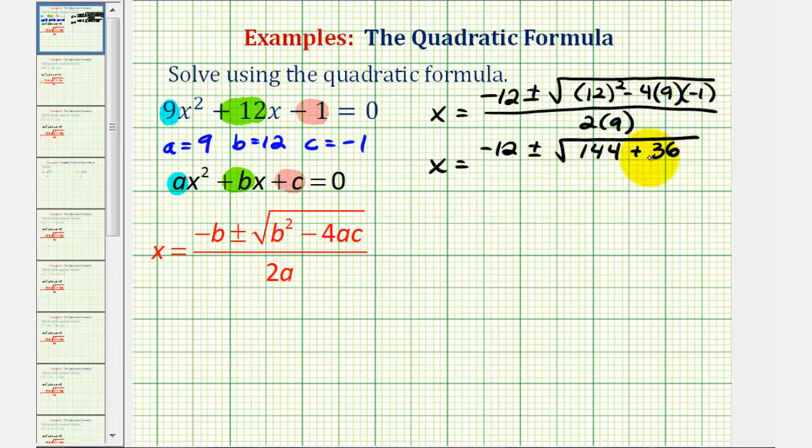So it's important to take our time when simplifying underneath the square root. This value is called the discriminant. This is where many errors can be made. All of this is divided by two times a, or in this case, eighteen.